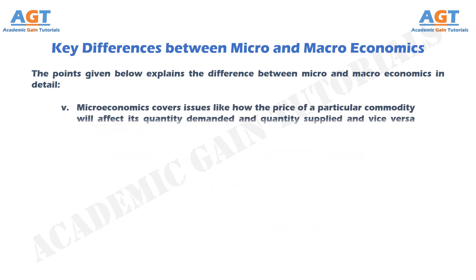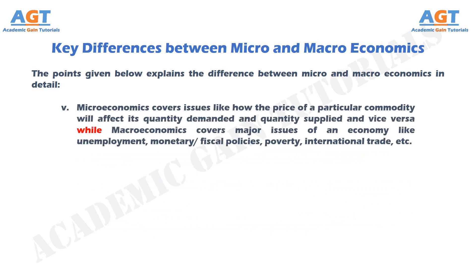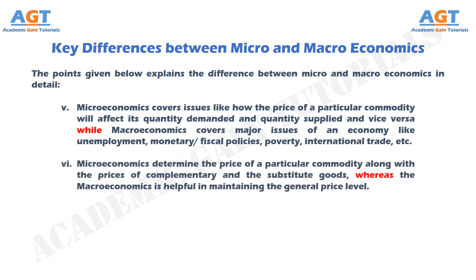Number 5: Microeconomics covers issues like how the price of a particular commodity will affect its quantity demanded and quantity supplied and vice versa. While macroeconomics covers major issues of an economy like unemployment, monetary/fiscal policies, poverty, international trade, etc. Number 6: Microeconomics determines the price of a particular commodity along with the prices of complementary and substitute goods, whereas macroeconomics is helpful in maintaining the general price level.